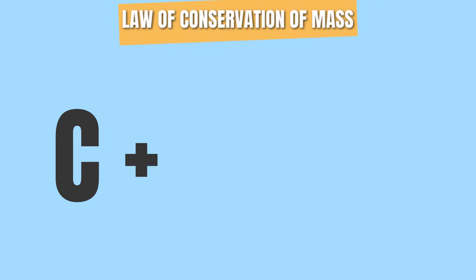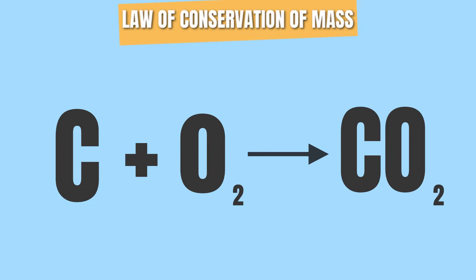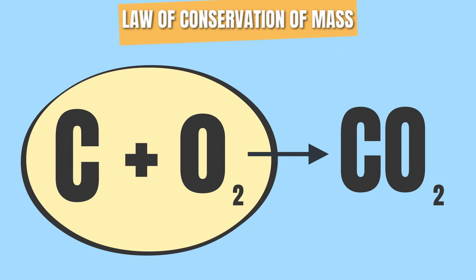Not only that, but chemical equations also help illustrate how the law of conservation of mass is followed. This means that the total amount of the substance on the reactant side will always be equal to the total amount of substance on the product side of a chemical equation.